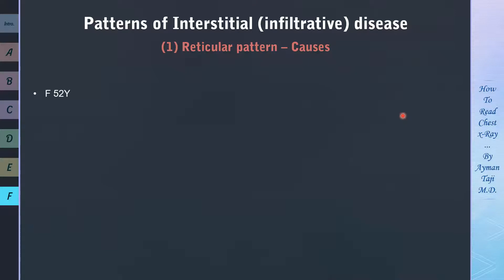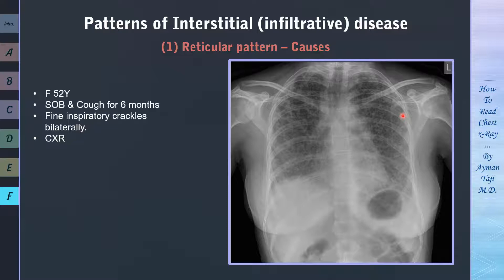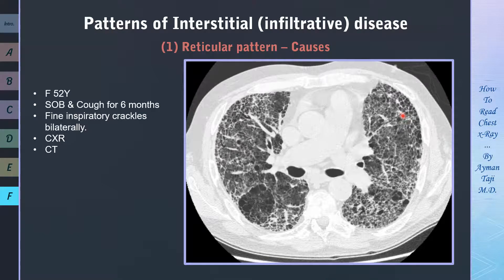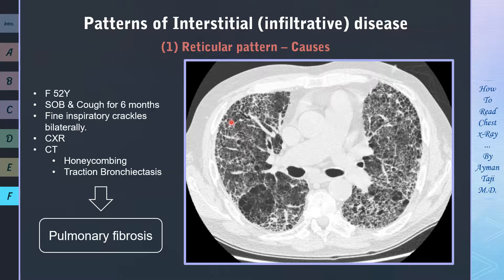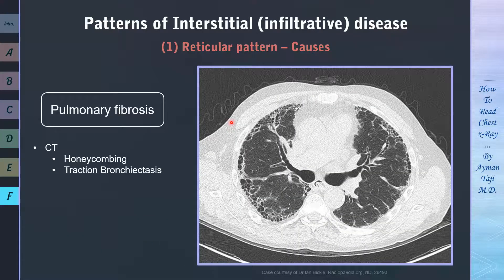A 52-year-old woman presents with a 6-month history of shortness of breath and non-productive cough. On auscultation, fine inspiratory crackles are found bilaterally, and her CXR shows diffuse bilateral interstitial infiltrates. CT reveals two very important findings: honeycombing and traction bronchiectasis. These result from fibrosis, which causes irreversible dilation of bronchi and bronchioles (traction bronchiectasis) and enlargement of airspaces (honeycombing). So pulmonary fibrosis is the most likely diagnosis, and this CT example clearly demonstrates both traction bronchiectasis and honeycombing.